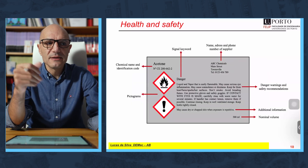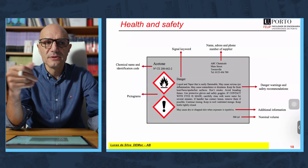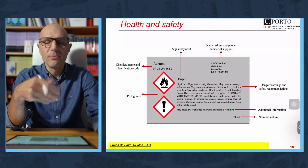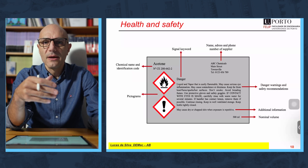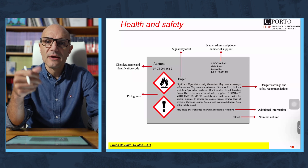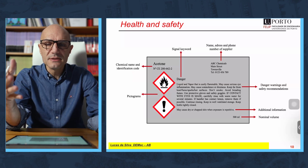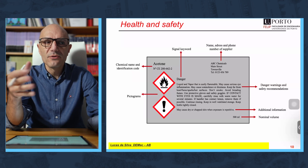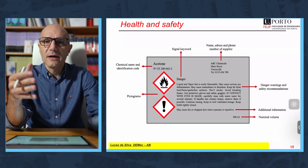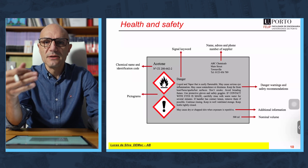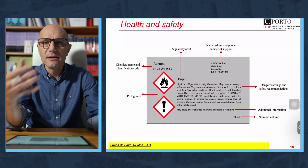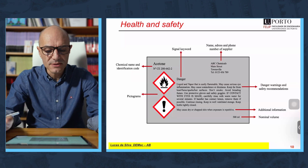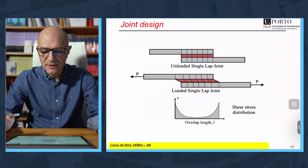Adhesive bonding is a chemical bonding — it's not like a rivet or a bolt, which are mechanical joints. You have chemical substances involved, so you need to be careful and know what the dangers are when you handle these kinds of products. That will be discussed in health and safety.